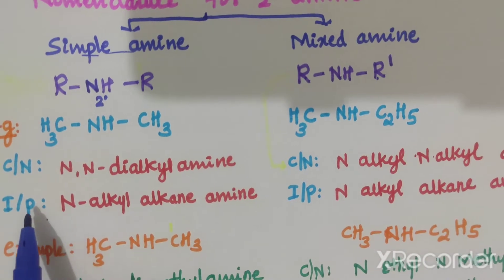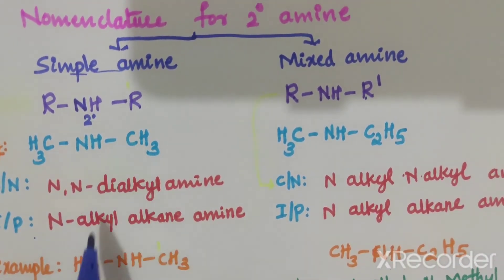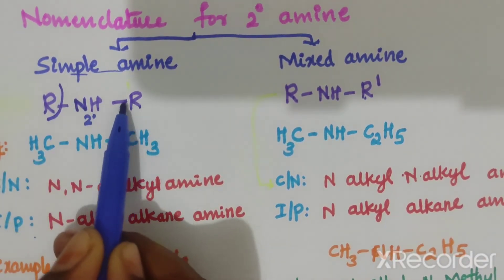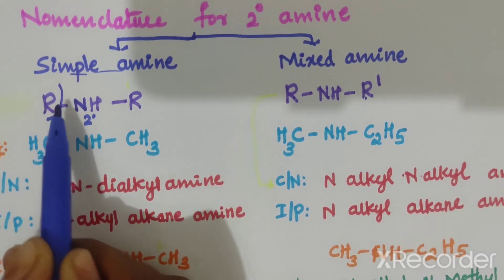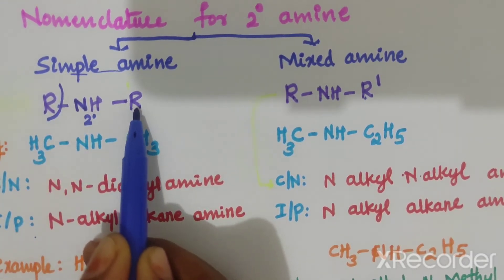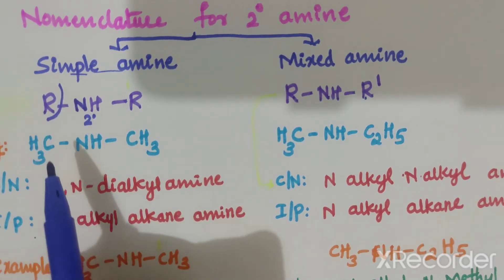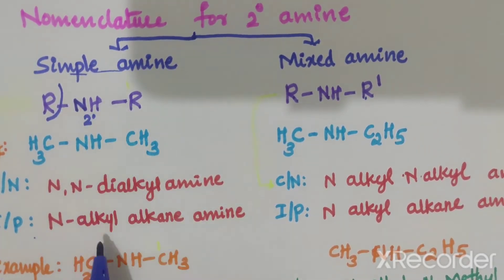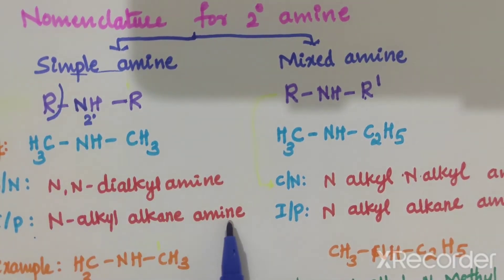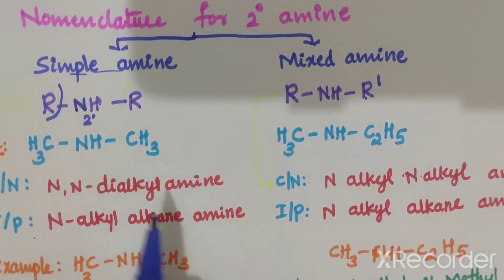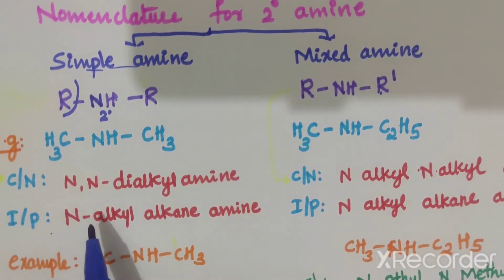For IUPAC nomenclature of a simple second degree amine, it is N-alkyl-alkan-amine. Identify the longest carbon chain and count substitutions on nitrogen. The carbon chain is the parent, nitrogen is attached as a substitution. So the IUPAC name is N-alkyl-alkan-amine.